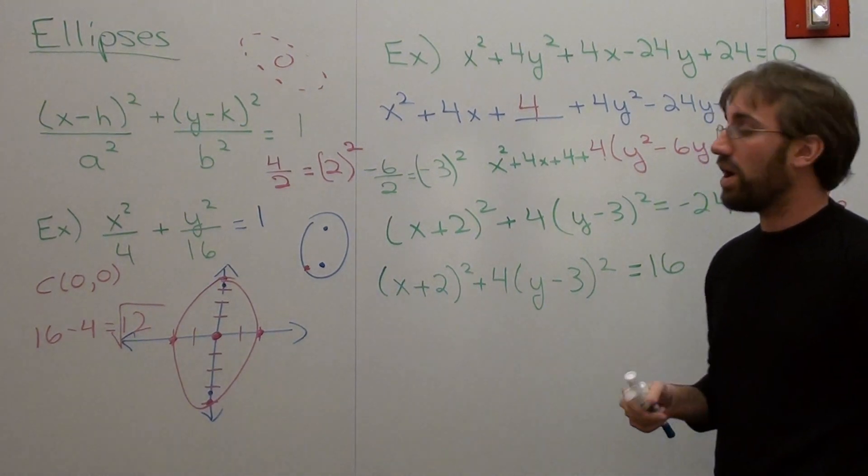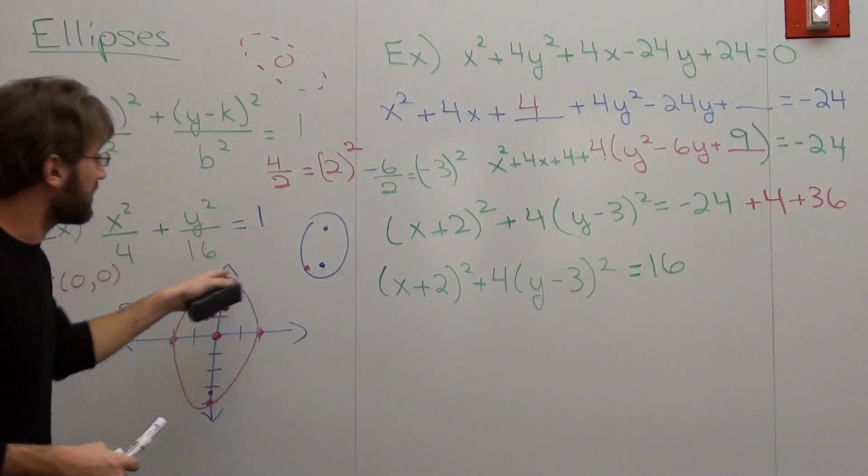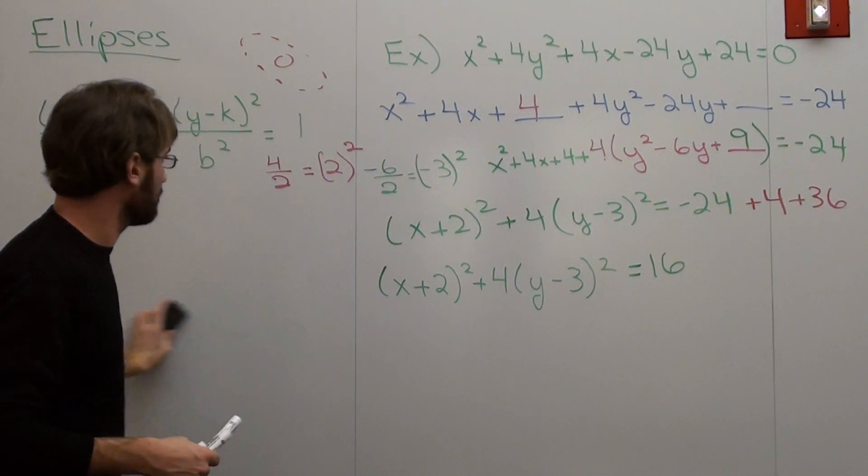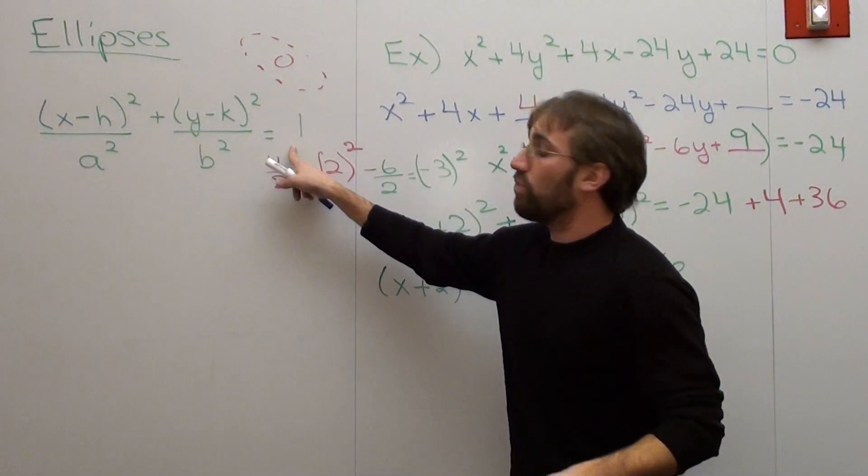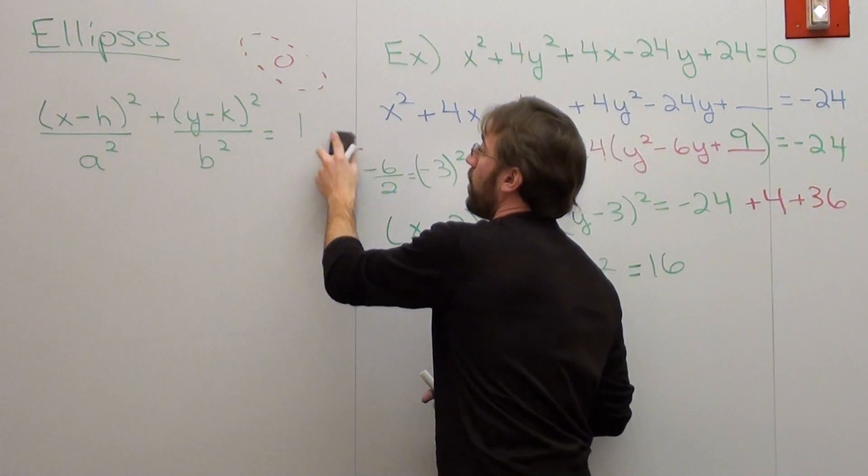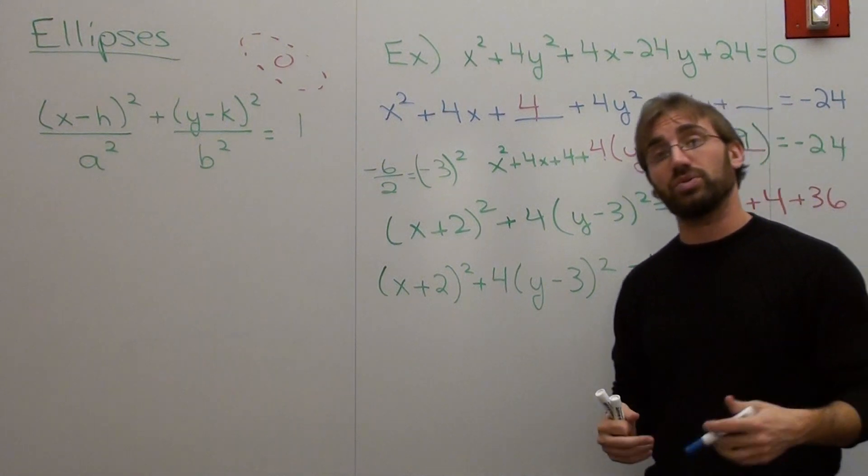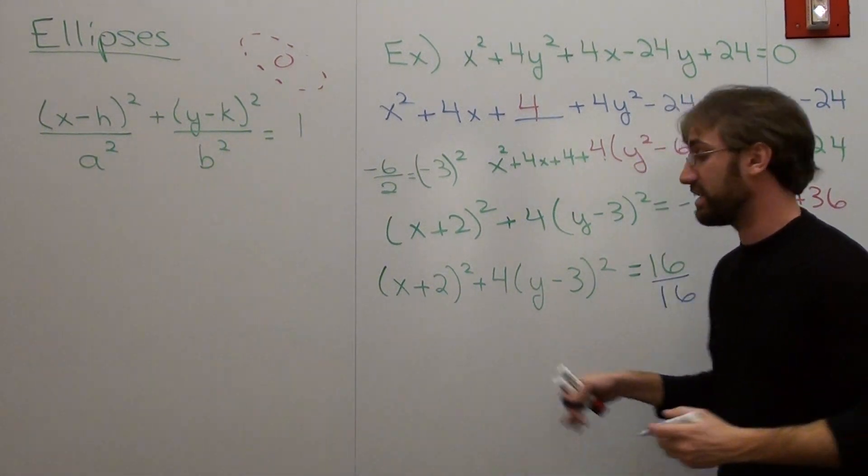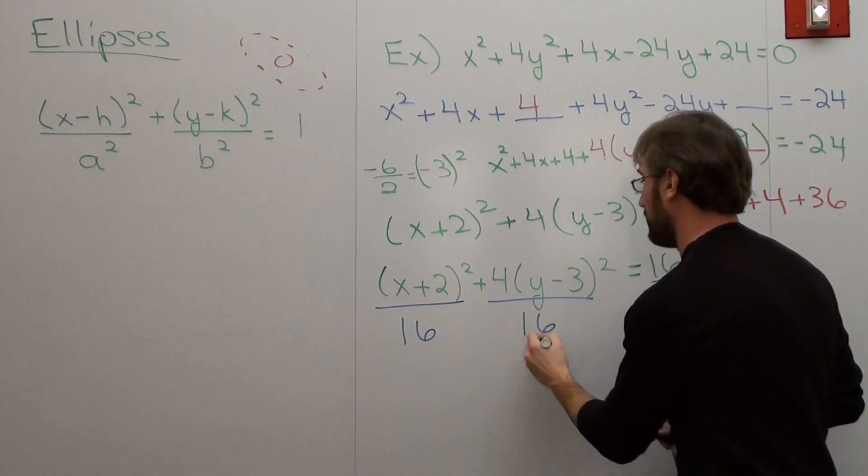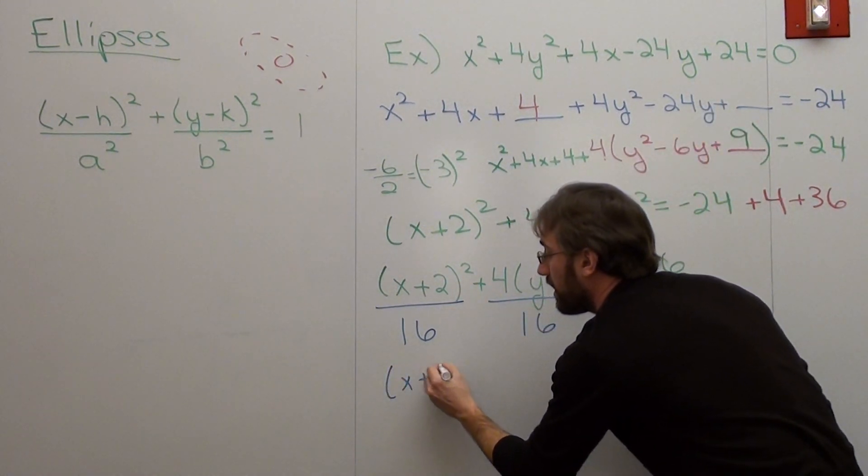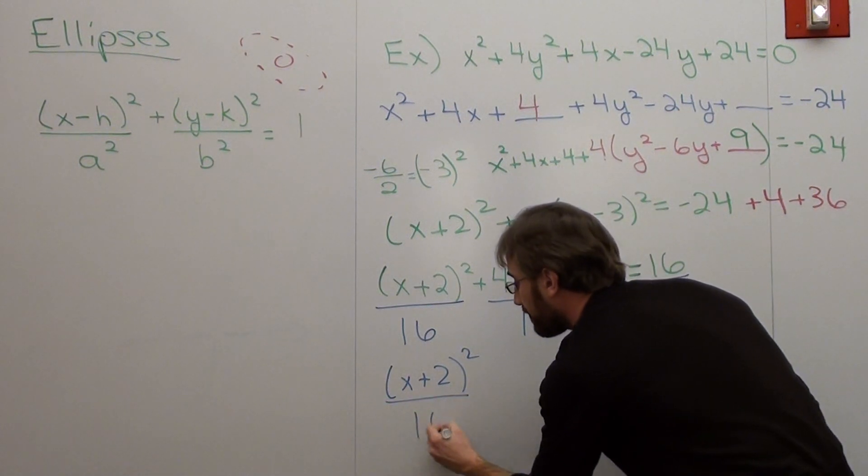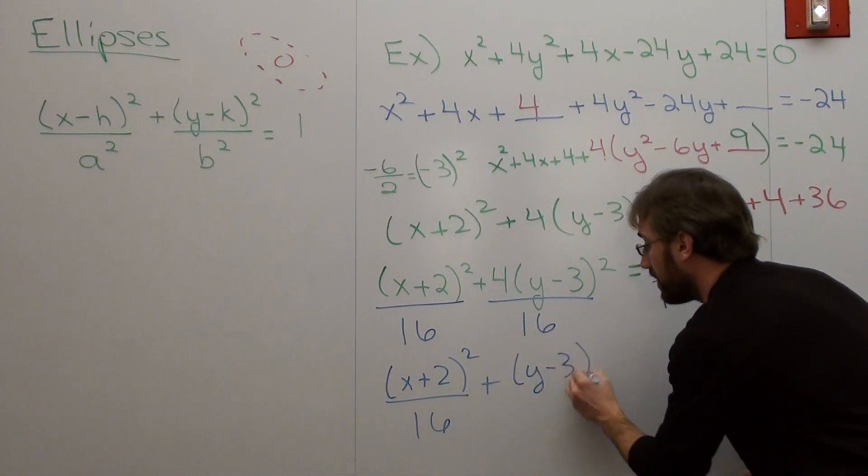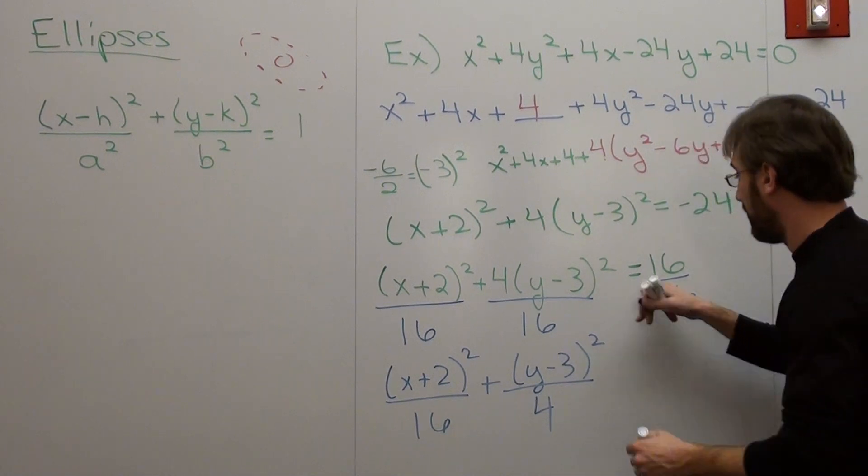When we work with elliptical form, our equation is supposed to end up equaling 1. This equals 16. So what we have to do is we have to divide this number by 16. Now, if we divide this term by 16, we've got to divide both of these terms by 16 as well. So that's (x+2)² over 16, plus 4 over 16 is a fourth, or just (y-3)² over 4. And that's equal to 1.